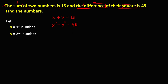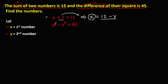So these are the two equations we'll use to find the numbers, and we'll solve them using the substitution method. From the first equation, we need to isolate one variable. We transpose the positive y to the other side, so the equation becomes x equals 15 minus y. Then we substitute this into the second equation.